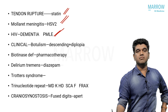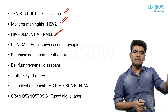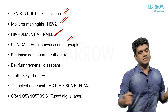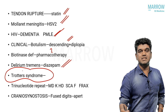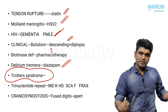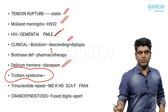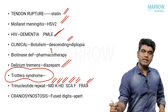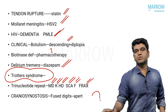HIV clinical question with dementia — PML — which Bashek has highlighted many times. Botulism can be answered from an ID perspective or clinically — the descending symmetrical palsy with diplopia he has mentioned very clearly. Biotinidase deficiency — a tough question. Delirium tremens — diazepam. Trotter syndrome — partly an ENT topic. Trinucleotide repeat diseases: myotonic dystrophy, Kennedy's disease, Huntington's disease, Friedreich's ataxia, Fragile X syndrome — mentioned many times.